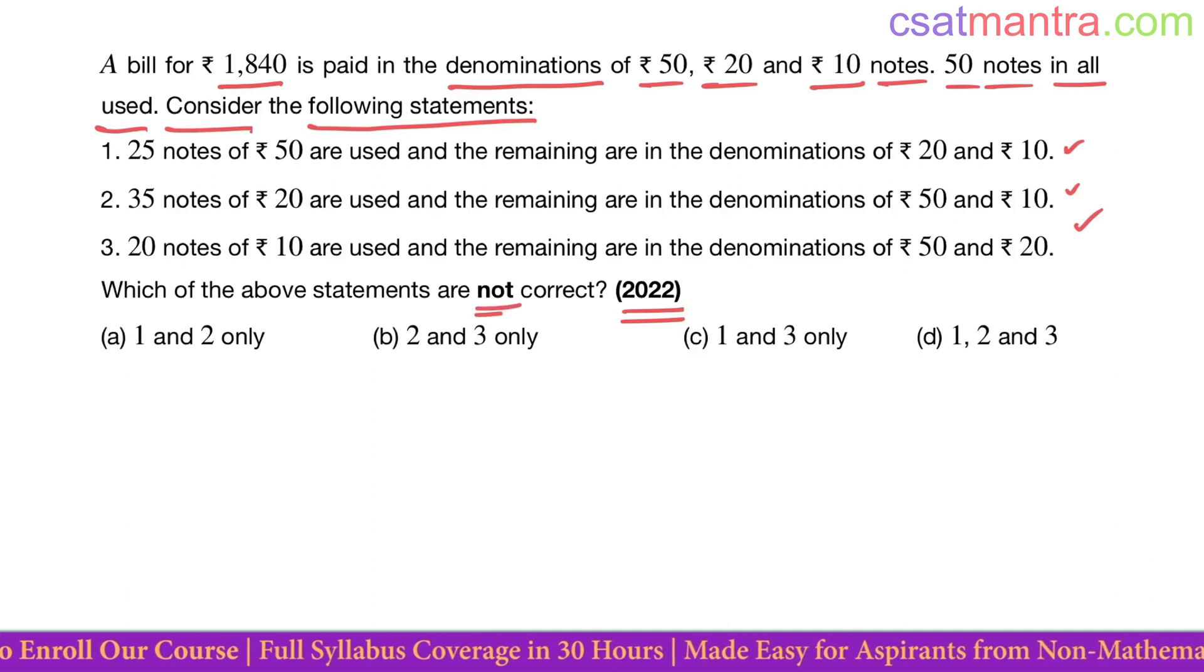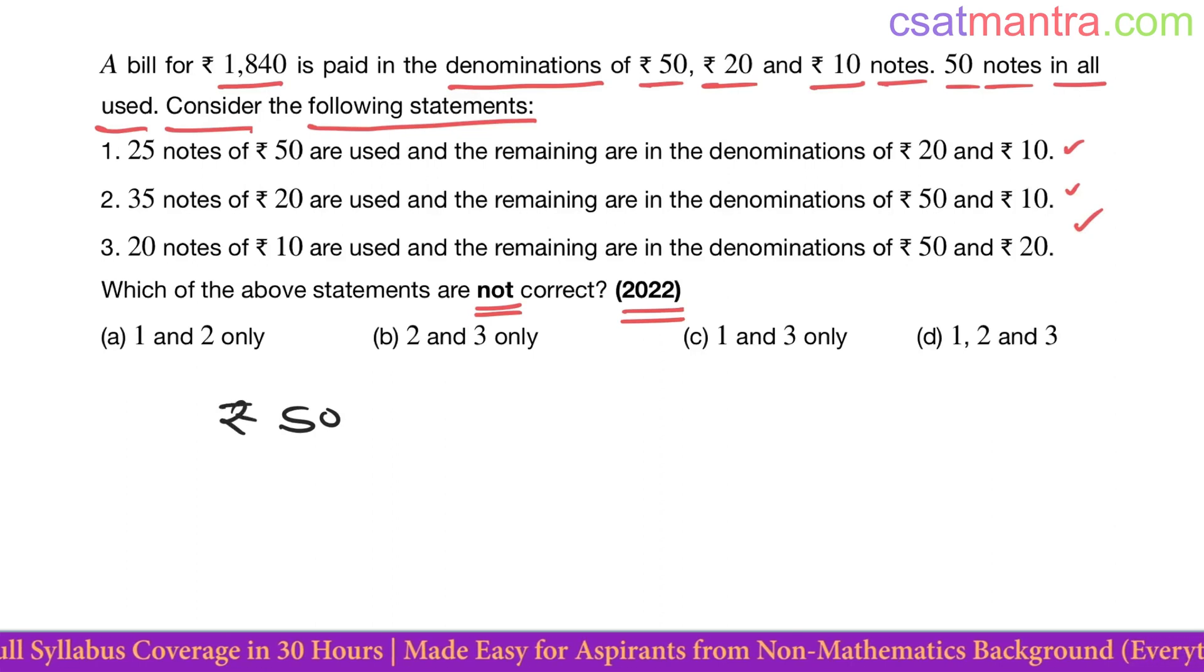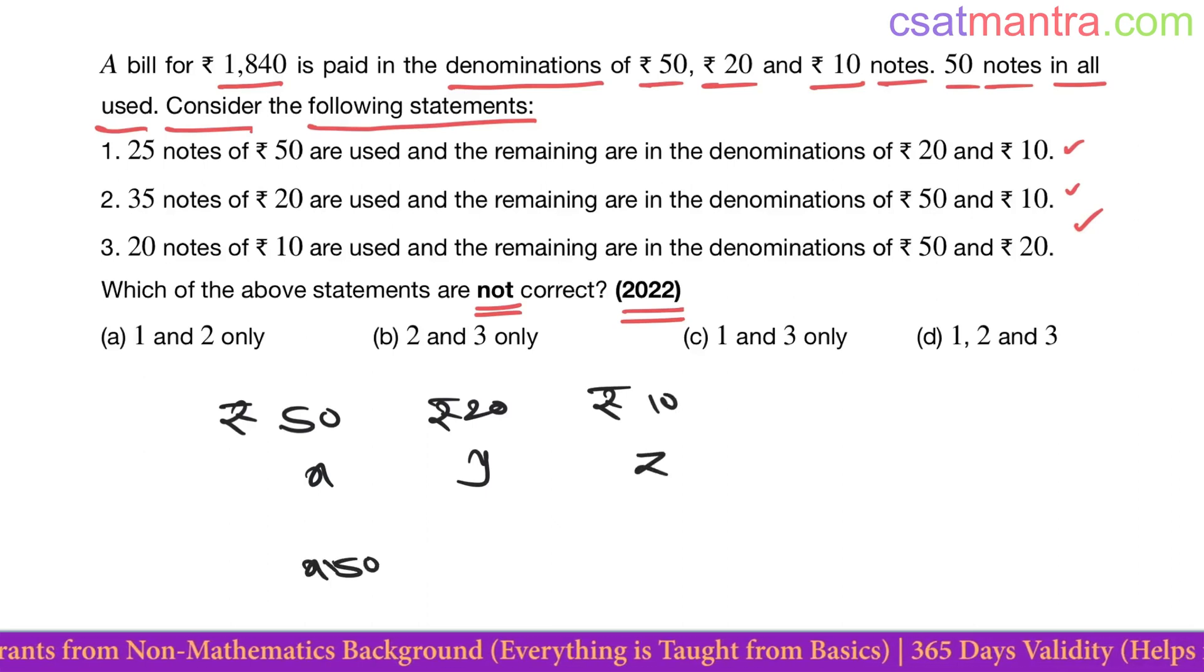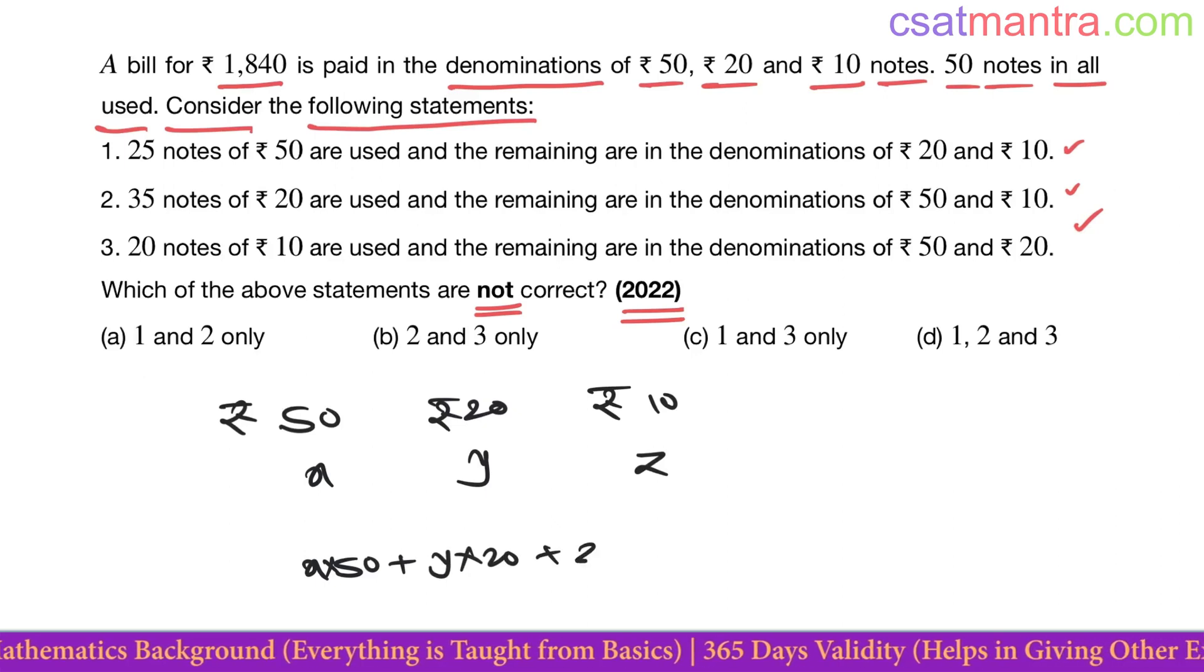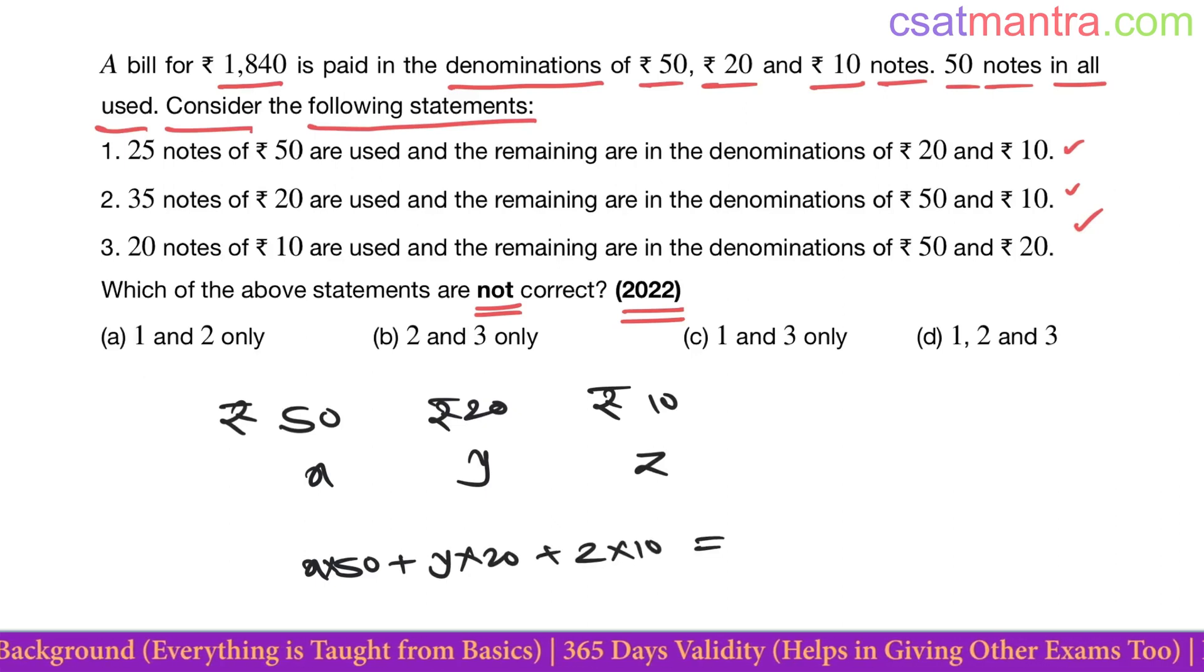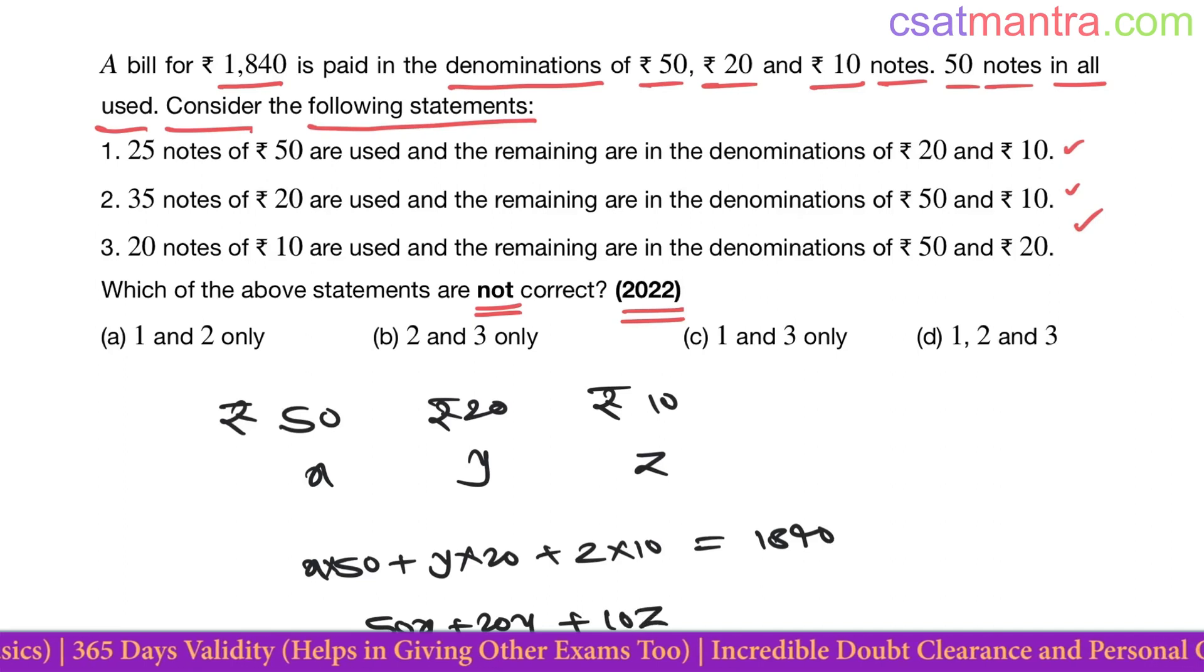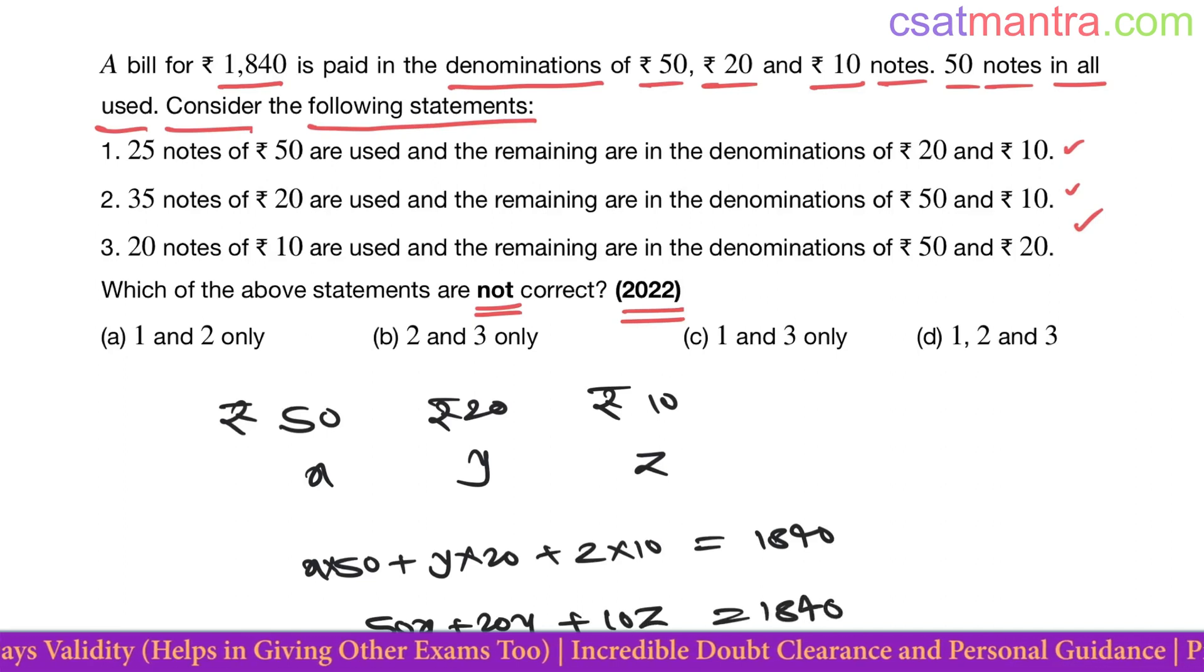Let's say we have x notes of ₹50, y notes of ₹20, and z notes of ₹10. So x into 50 plus y into 20 plus z into 10, the whole amount is 1840. So 50x + 20y + 10z = 1840. And the sum of the notes: x + y + z = 50.